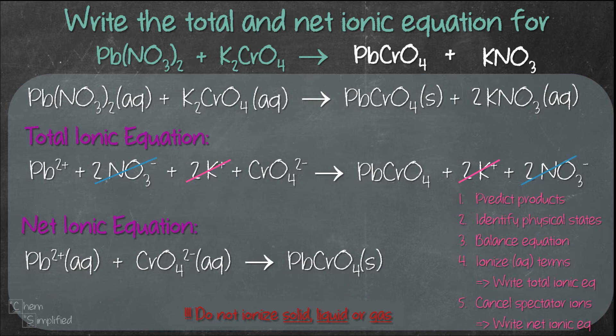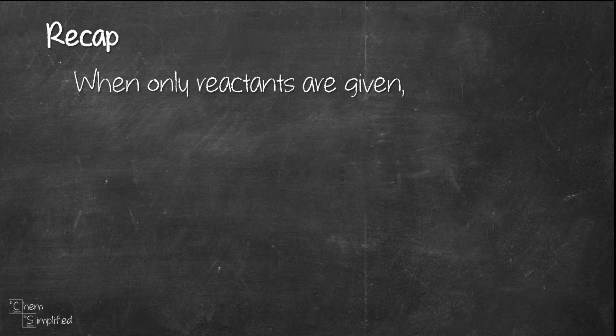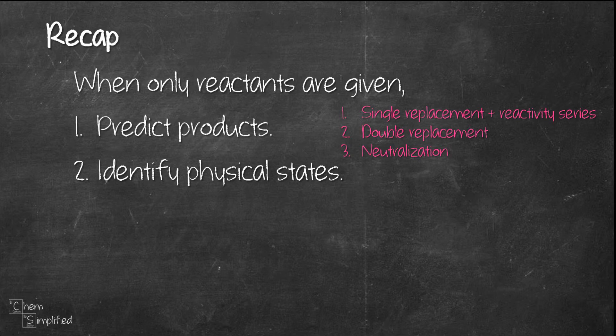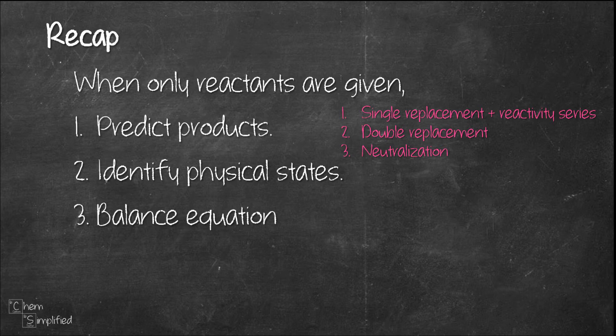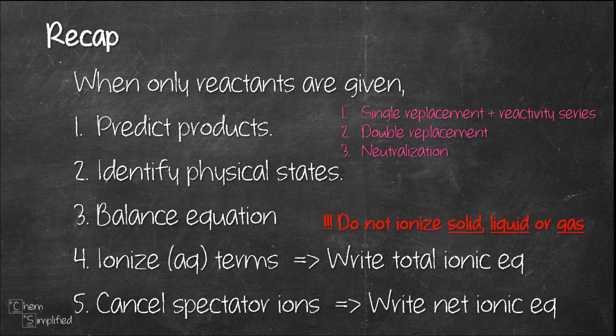We managed to write the total and net ionic equation in 5 steps. To recap, when only reactants are given, we first predict the products after figuring out which type of reaction is involved. Then we identify the physical states using solubility rules, balance the equation, ionize the aqueous terms to get the total ionic equation, and finally cancel the spectator ions and rewrite to get the net ionic equation.